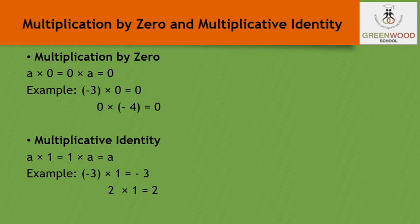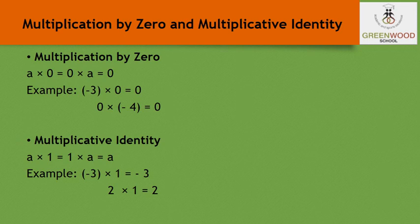If we multiply any integer by 0, the answer is always 0. For example, minus 3 times 0 is 0, and minus 4 times 0 is also 0. Second is multiplicative identity: if any number is multiplied by 1, we get the number itself. For example, 2 times 1 is 2, and minus 3 times 1 is minus 3. So a times 1 equals 1 times a equals a.